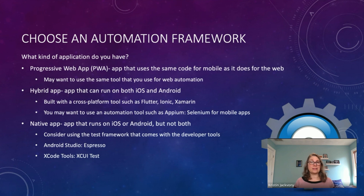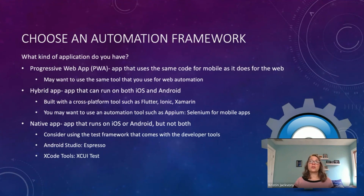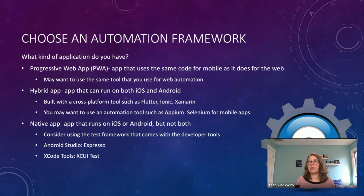If you have a progressive web app, you might want to use the same tool you're using for your web automation. For example, if your web automation is written in Cypress, you could run the very same tests for mobile that you've already written for web — you just specify that Cypress should use the mobile browser at a particular screen size.